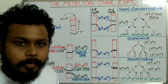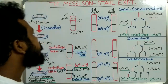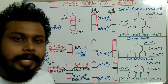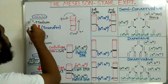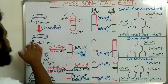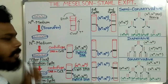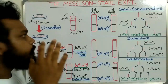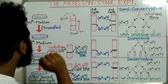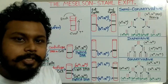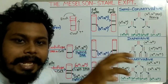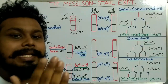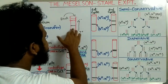So this DNA gives a band at that position. This is the main concept of cesium chloride density gradient centrifugation. Overall, we can get three types of bands depending on the uptake of nitrogen-15, the heavy nitrogen, or the uptake of normal nitrogen N14. Because N15 is the heavy isotope, DNA containing N15 will be present at the bottom since their density is high.